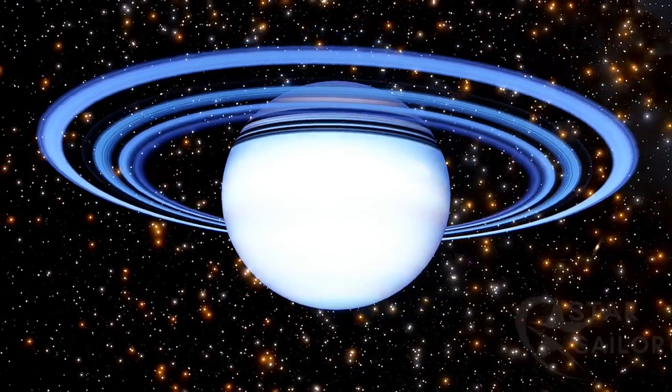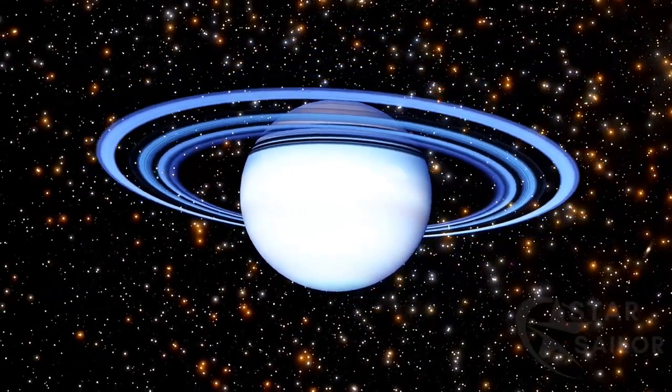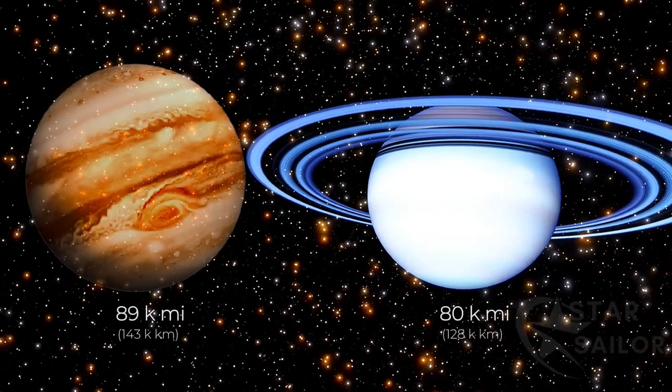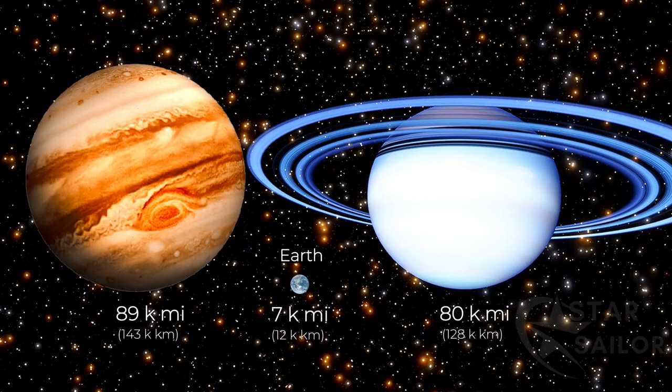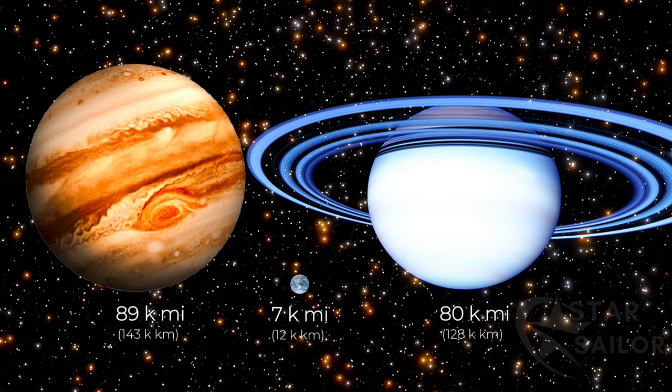Methuselah is a gas giant with a diameter of about 80,000 miles, a little smaller than Jupiter, the largest planet in our solar system, and has a mass approximately 2.5 times that of Jupiter.